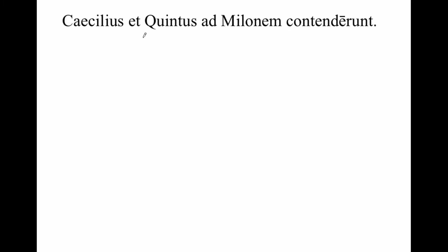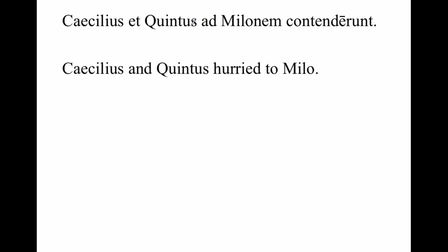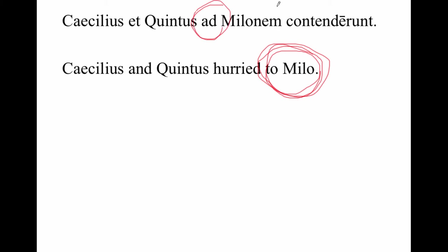Caecilius et Quintus ad Milonem contenderunt. Because it's motion toward, we are using 'ad.' We would translate this as 'Caecilius and Quintus hurried to Milo,' but we would not use dative here. We would use dative when we have 'to Milo' in the sense of 'gave something to Milo,' but in the sense of 'hurried to Milo,' we use the preposition 'ad' followed by the accusative.